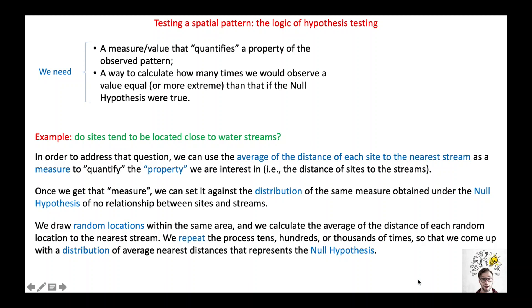Let's assume that we want to test if some archaeological sites are associated with water streams. To quantify the property we are interested in — that is, being close to water streams — we calculate the minimum distance of each site to the nearest water stream, and then we average all these distances to come up with a single measure.